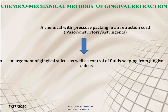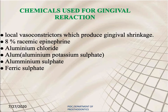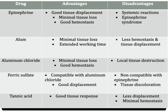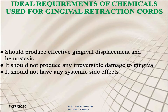Chemical-mechanical methods of gingival retraction use a chemical with pressure-packing in a retraction cord. The chemicals used are usually vasoconstrictors or astringents, which help in enlargement of the gingival sulcus and control of fluid seeping from it. Chemicals used include local vasoconstrictors providing gingival shrinkage, 8% racemic epinephrine, aluminum chloride, alum, aluminum sulfate, and ferric sulfate. Ideal requirements include effective gingival displacement and hemostasis, no irreversible damage to gingiva, and no systemic side effects.